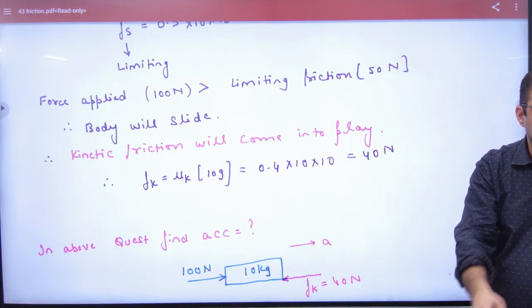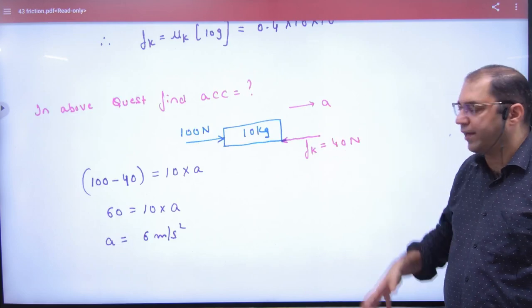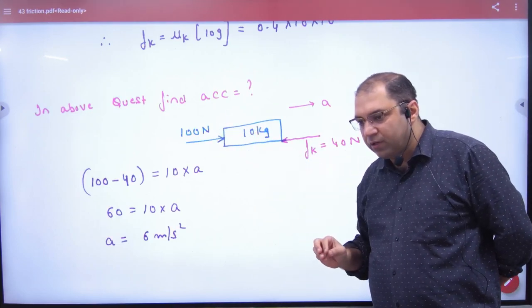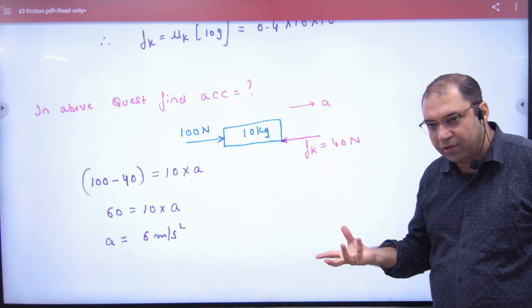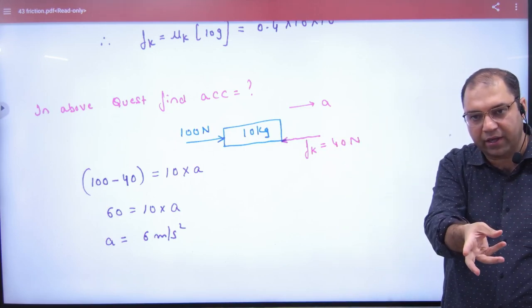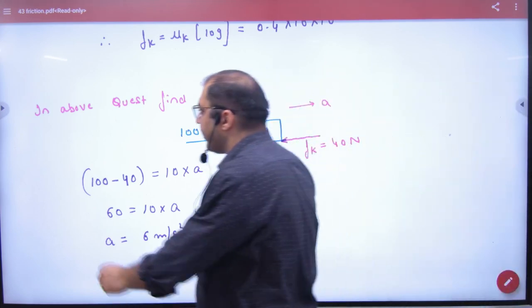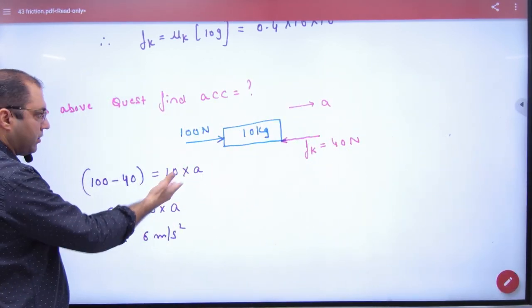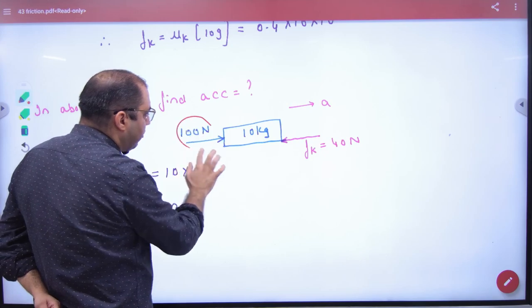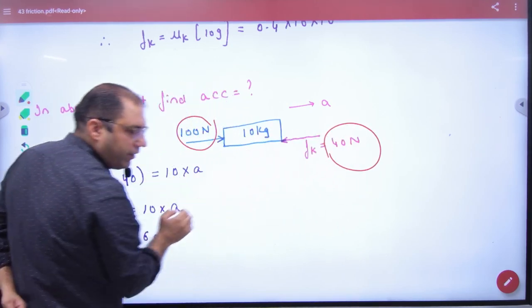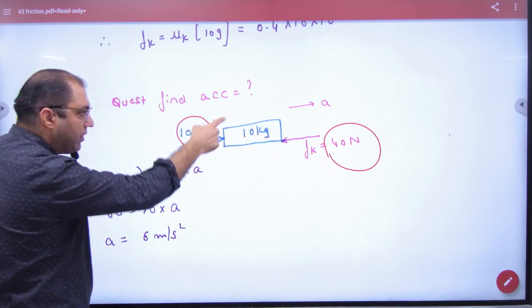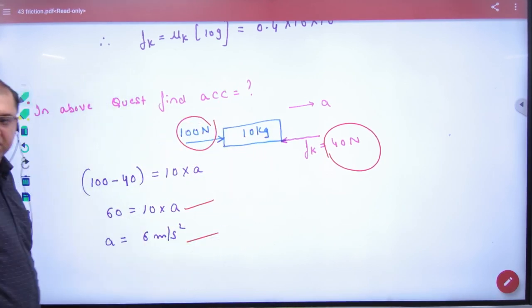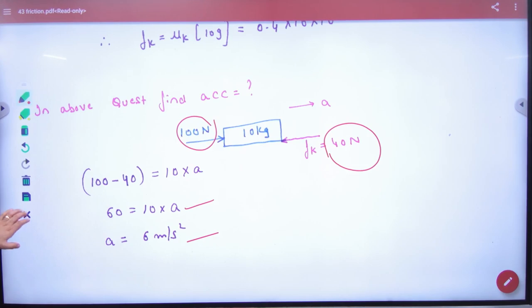The next part will come. If the body is running and you put 100 N force, what is kinetic friction? 40 N in opposite direction. Because the body is running, it is kinetic. So tell the body what will happen. This is a big force and this is a small force. Newton's second law says big force minus small force is mass into acceleration. So there is acceleration. So this is how you will go.